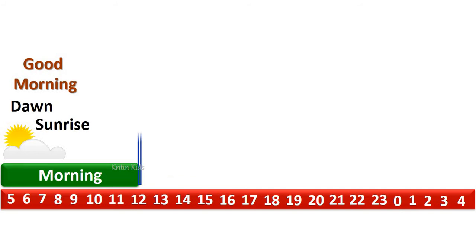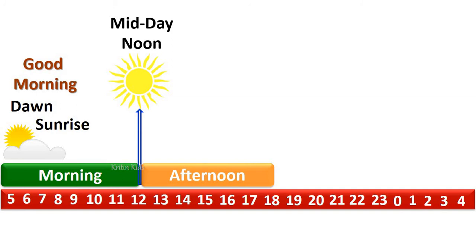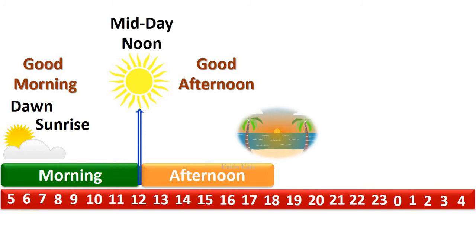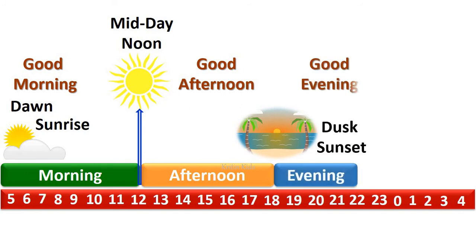At 12 o'clock, we have the midday, which is the noon. After that, we have afternoon from 12 o'clock to 6 o'clock. During that time, we can wish as good afternoon. And then comes the dusk, that is our sunset. From 6 o'clock to 10 o'clock, it is called as evening. We can wish as good evening.